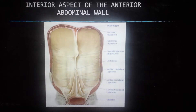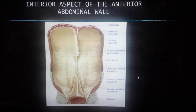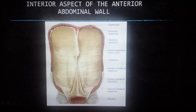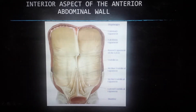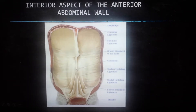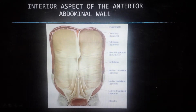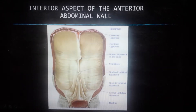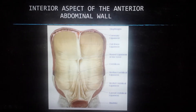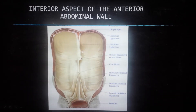Here you have the interior aspect of the anterior abdominal wall. As labeled, there is the lateral umbilical ligament, the medial umbilical ligament, the median umbilical ligament, the umbilicus, the round ligament of the liver, and the falciform ligament.